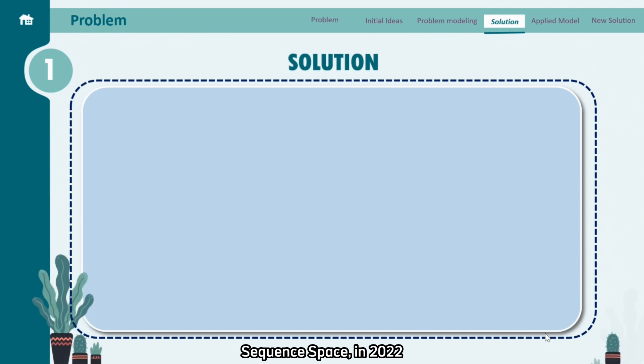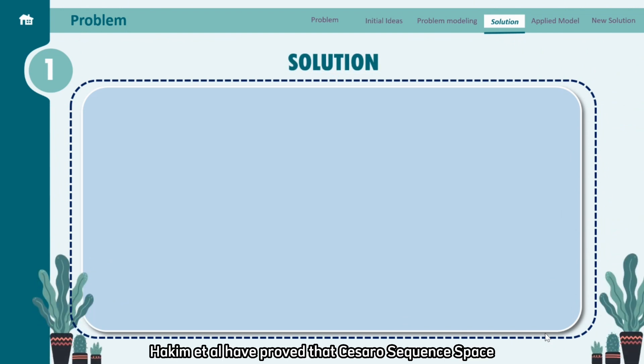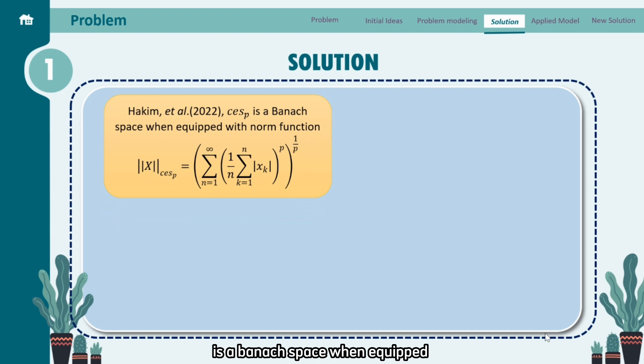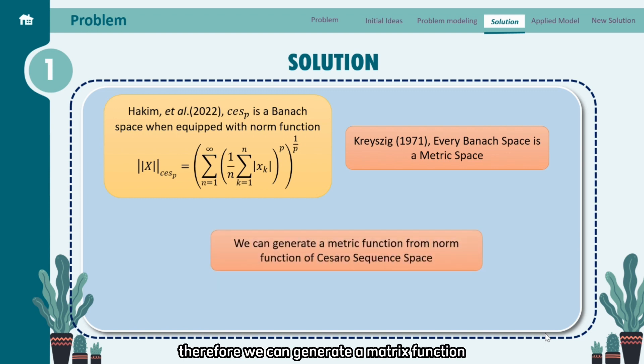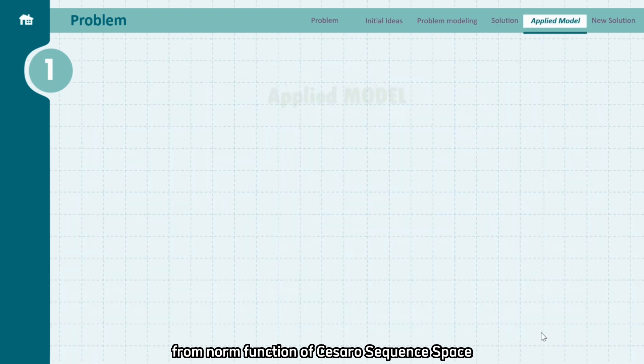In 2022, Hakeem et al. have proved that Cesaro sequence space is a Banach space when equipped with this following norm function. And according to Krasnoselskii in 1971, every Banach space is a metric space. Therefore, we can generate a metric function from norm function of Cesaro sequence space.